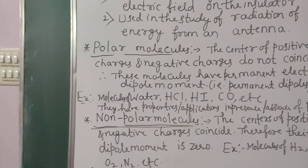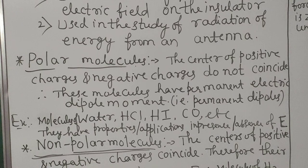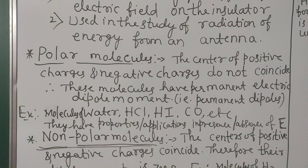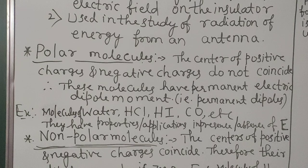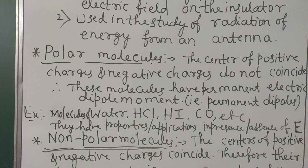While studying the physical significance of dipoles, we come across polar molecules. Polar means plus and minus are separated. The center of positive charges and negative charges do not coincide — they are well separated by a distance 2a, with one charge being -Q and another +Q.